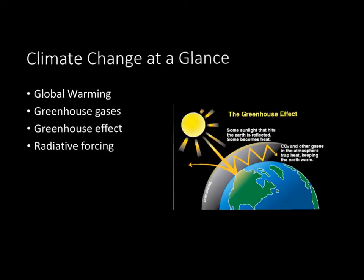Greenhouse gases are natural and they're not inherently bad. The problem is that we're producing them in massive amounts and in unnatural ways. We're producing too much CO2 and N2O compared to what nature is able to normally sustain. These gases are put into the atmosphere by fossil fuel use and deforestation, for instance in the case of CO2. There's a term known as radiative forcing, which is basically a way to measure the amount of change in thermal energy that a given factor causes.